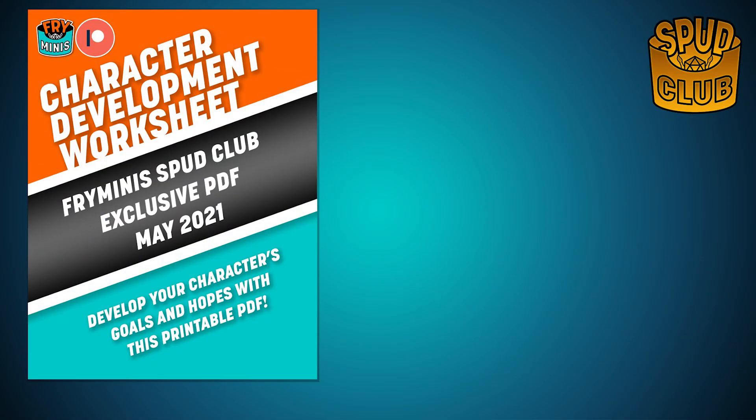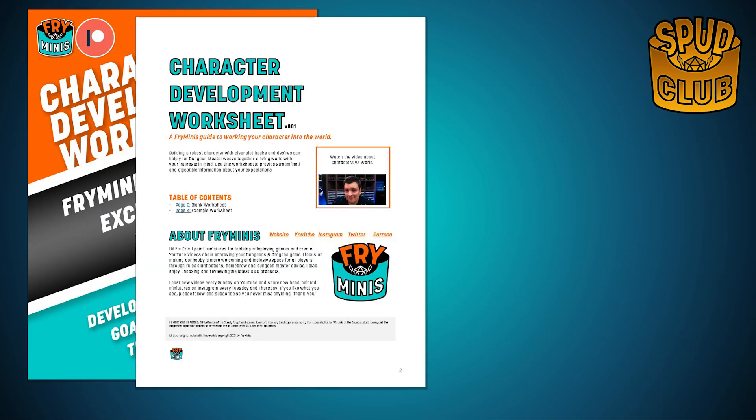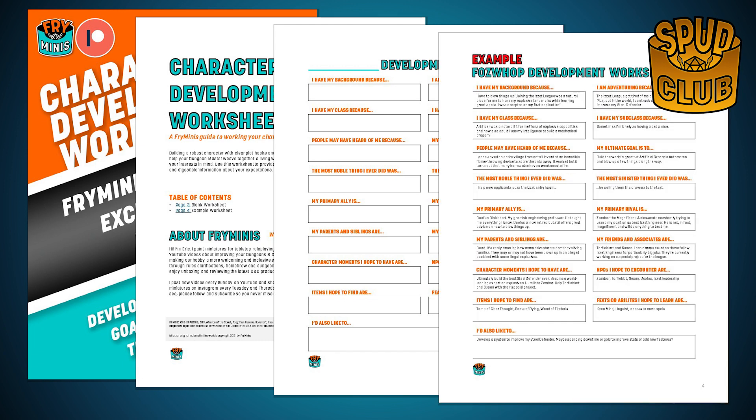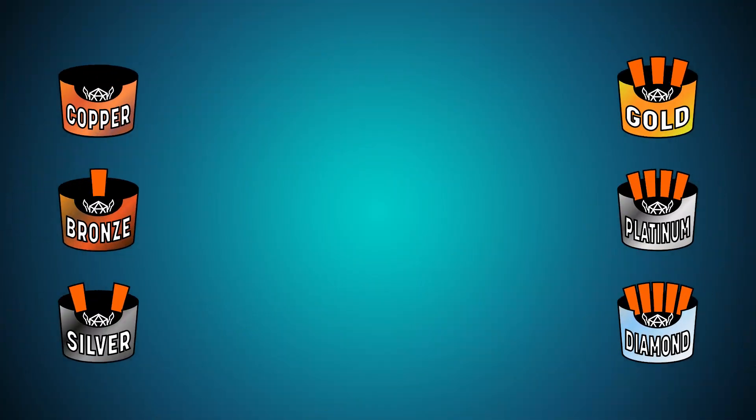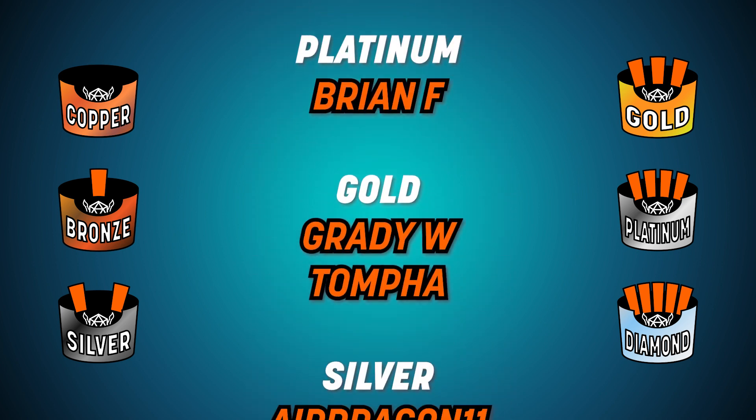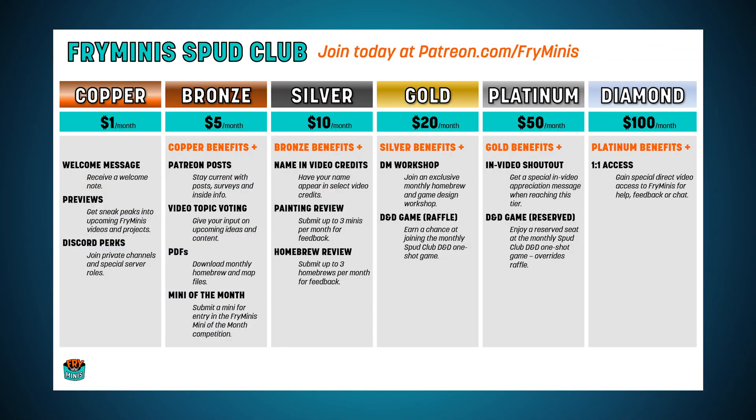To help simplify the process, I've created an easy PDF available to my bronze and higher patrons. Quickly gather crucial information from your players about their characters and how they would like to tie them to the world. Learn what kind of items they'd like to find, which NPCs from their past they'd like to encounter, and more. How you use that information is up to you. Shout out to my patrons, The Spud Club, for their continued support. Are you interested in supporting the channel? Please consider becoming a patron for as little as $1 per month.